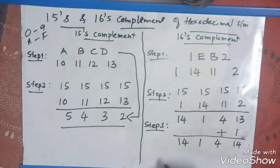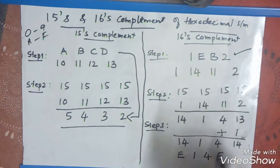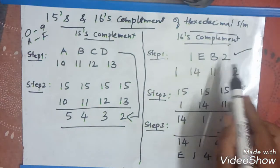Now, convert this number to hexadecimal. What is 14 indicates? It is e, this is 1, this is 4, and 14 is again e. So, this is e14e is the sixteenth complement of 1eb2.